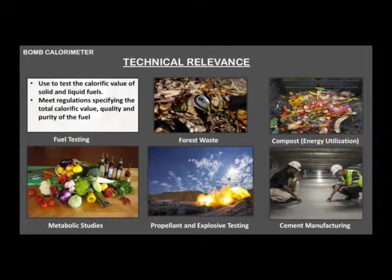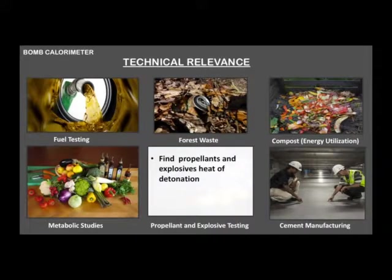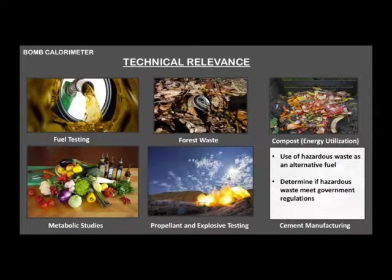Another use of the bomb calorimeter is going to be on the propellant and explosive testing. This way companies can find propellants and explosives heat of detonation. Then we have the cement manufactory, which uses a lot of hazard waste as an alternative fuel, and there's some government regulations that they have to meet, and the only way to know if they're meeting these government regulations is by using a bomb calorimeter on these hazard waste materials.